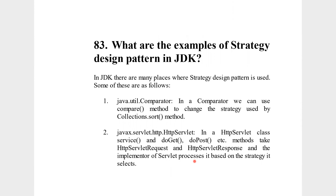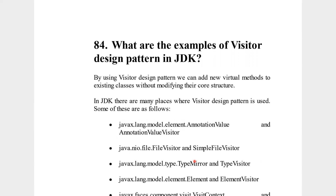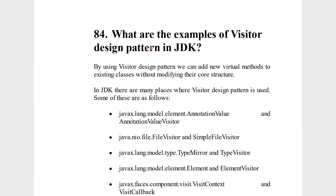Now let's talk about the strategy design pattern in JDK and its examples. The best example is Comparator — we have a compare method where you can always change the strategy. In Servlet, we have doGet and doPost methods which take an HTTP request and response, and we can implement many strategies there.